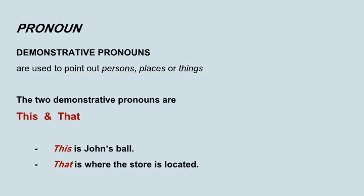Demonstrative pronouns are used to point out persons, places, or things. The two demonstrative pronouns are this and that. Let's look at these sentences: This is John's ball. That is where the store is located.